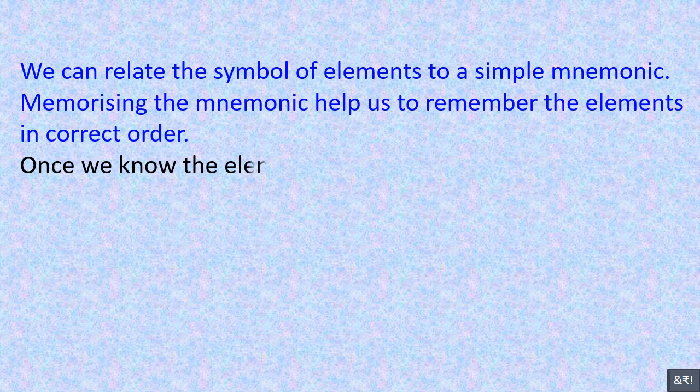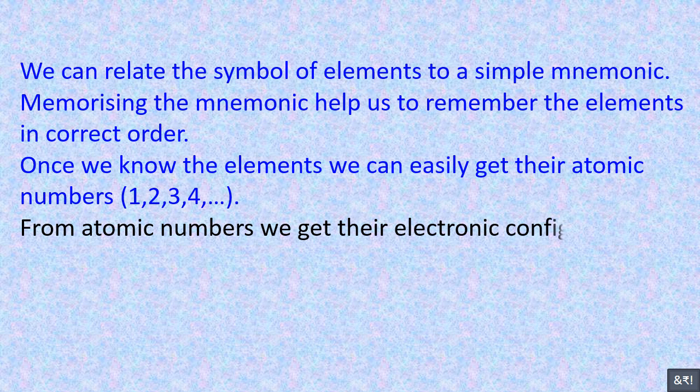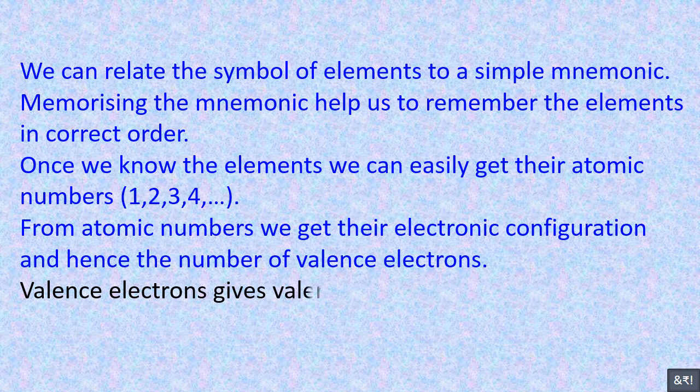Once we know the elements we can easily get their atomic numbers 1, 2, 3, 4, etc. From atomic numbers we get their electronic configuration and hence the number of valence electrons. Valence electrons give valency and hence properties of that element.